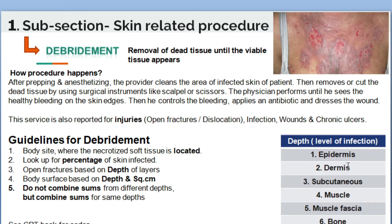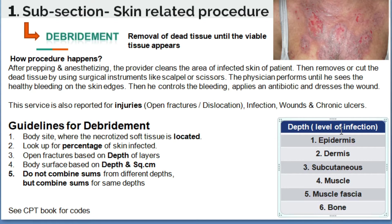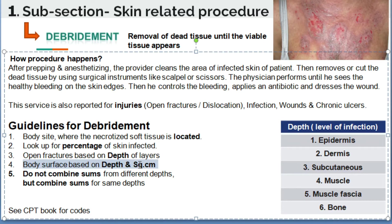The levels of depth are: first the superficial layer — epidermis; second is dermis; after that subcutaneous tissue; then muscle; then muscle fascia; and finally bone appears. These are the levels of infection. The coder must identify the depth of the debridement based on body surface, and square centimeters should also be identified.